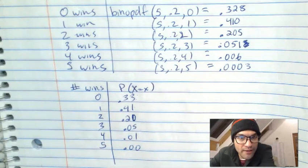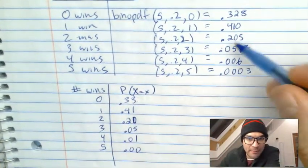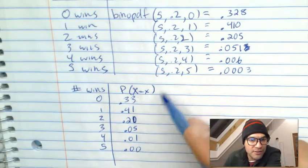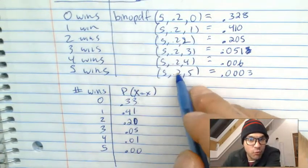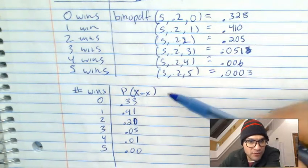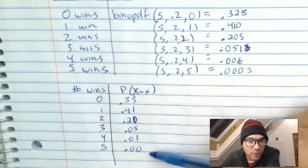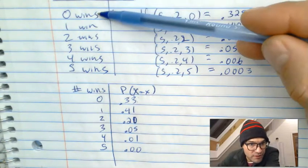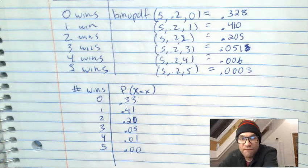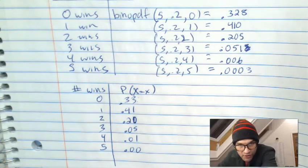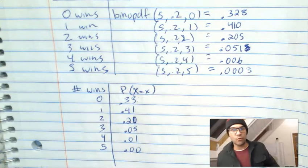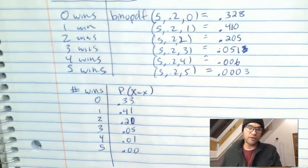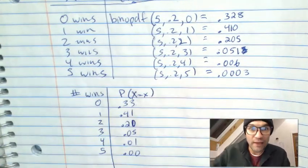Filling out the probability table with all those values, the probabilities add up to one because something has to happen — you either win zero, one, two, three, four, or five times out of five games. In the next video, we'll talk about finding the probability of winning more than or less than a certain amount of times using this table.